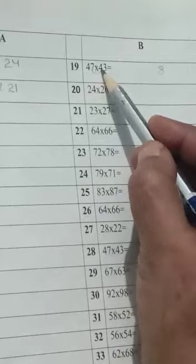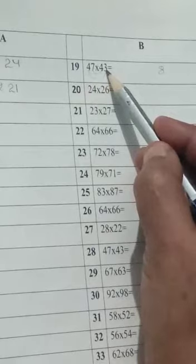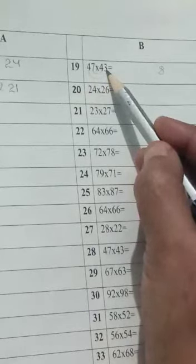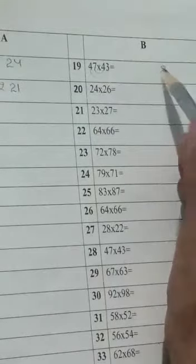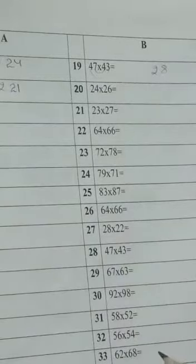7 4s are 28. 4 3s are 12. So 28 plus 12 is 40. Add 2 which is carry forward. 42, 2 to write, 4 carry forward.